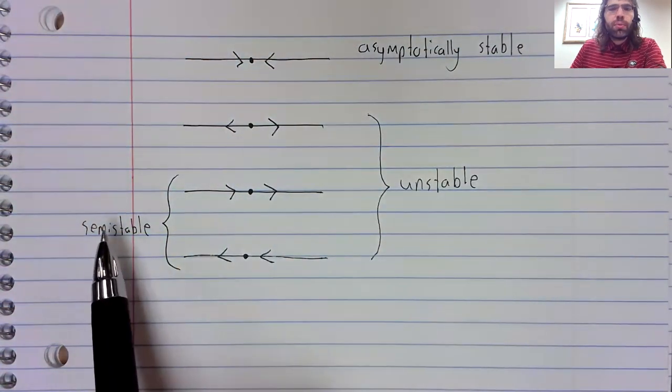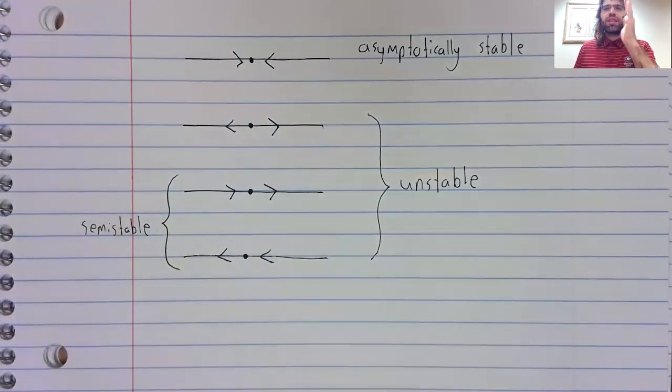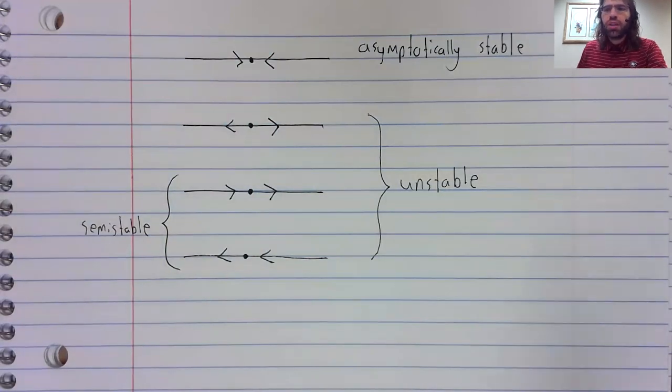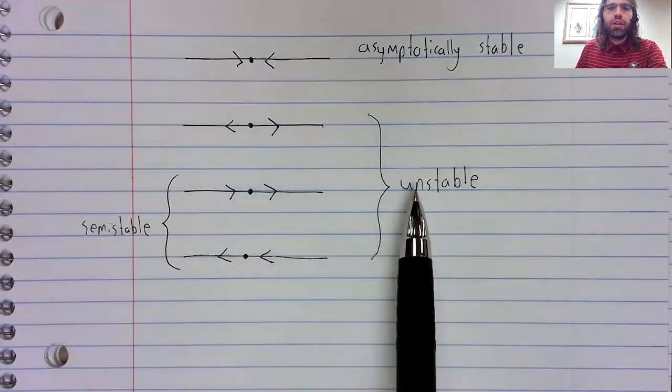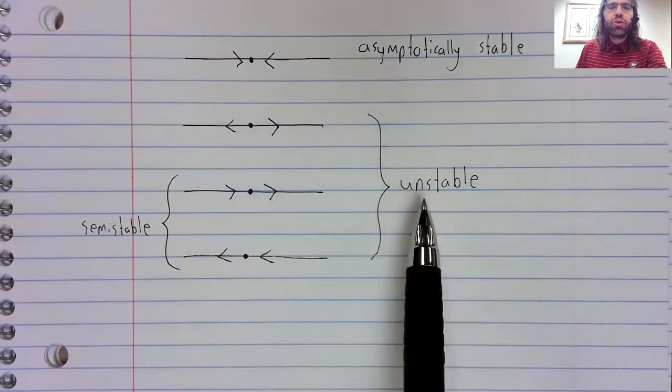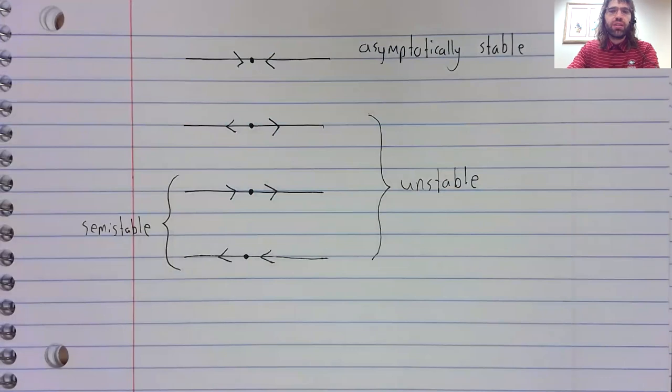This terminology could be misleading, though. This makes it sound like you've got asymptotic stability and you've got instability, and then between those, you have semi-stability. That's not the case. Semi-stable fixed points are unstable. They're just a special case of unstable fixed point.